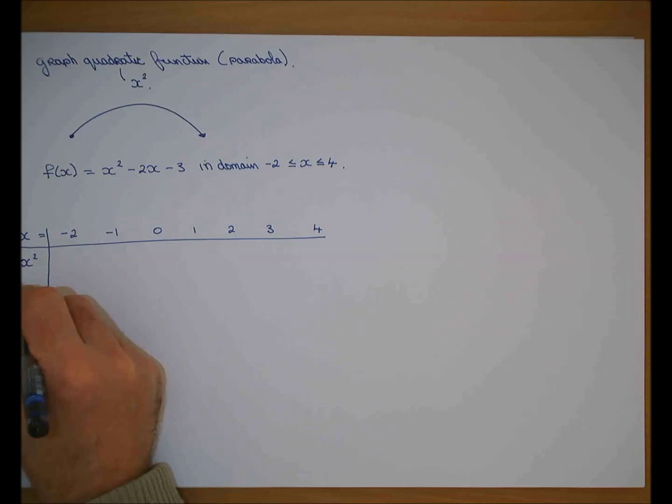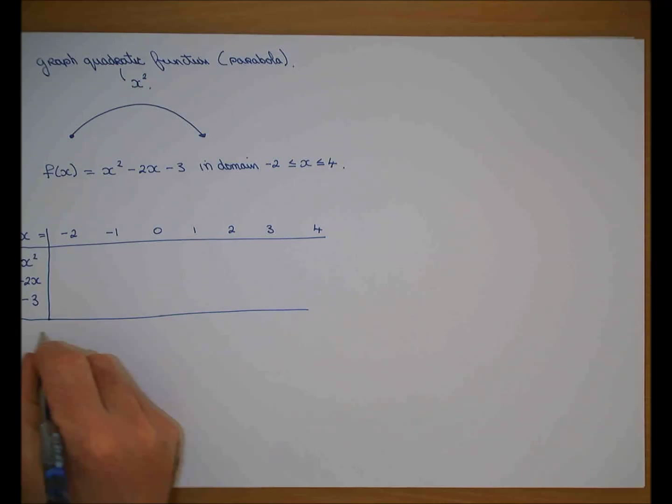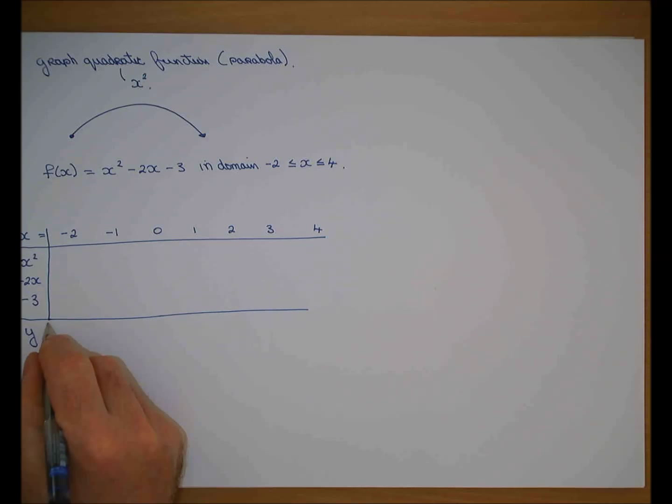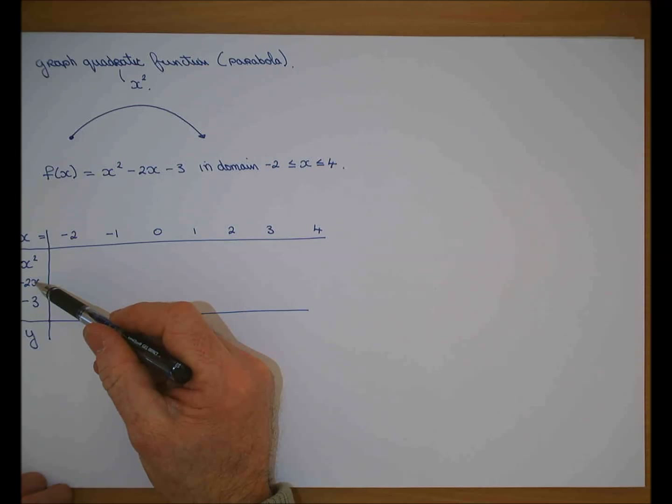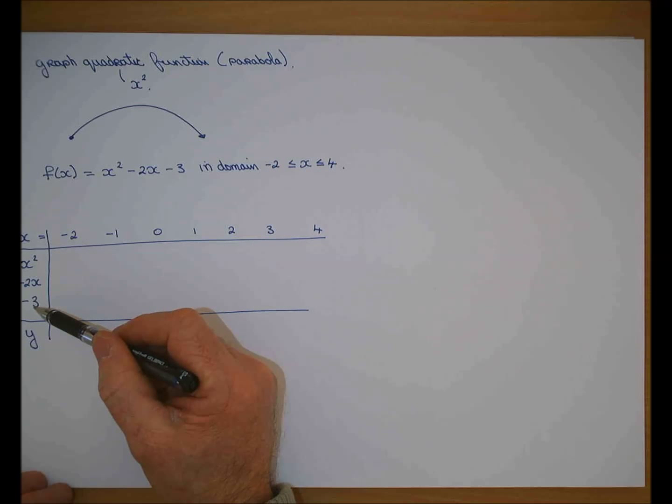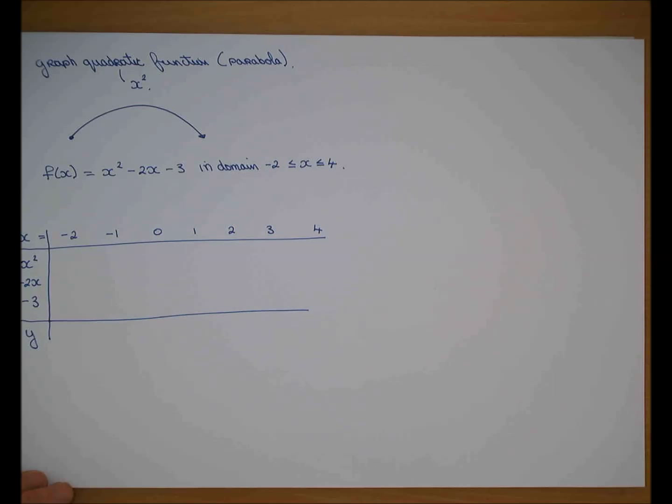And to get each point what do you have to work out? X squared minus 2x minus 3, and when you add them up what do you have? So drawing a straight line there was just the x and the number, the linear function. Now it's a quadratic function.